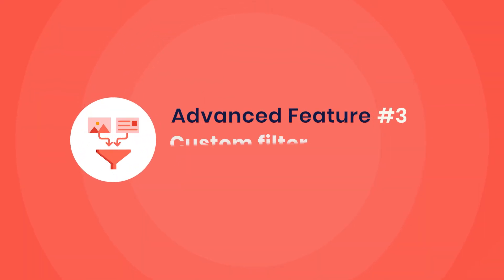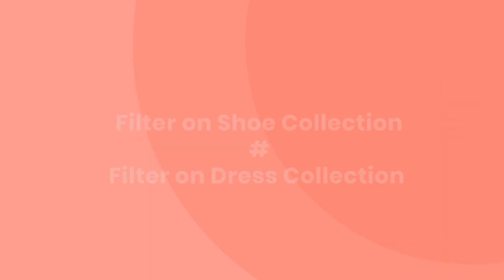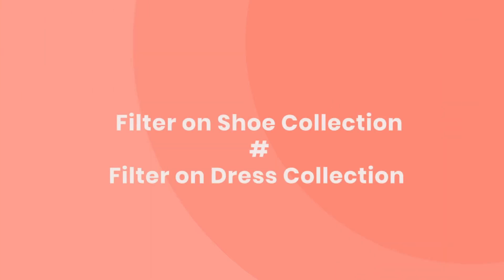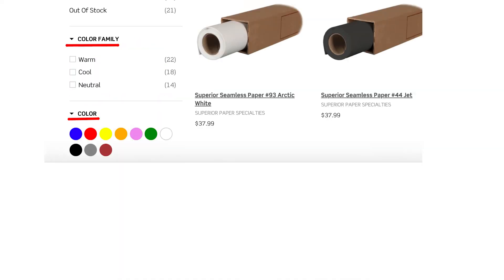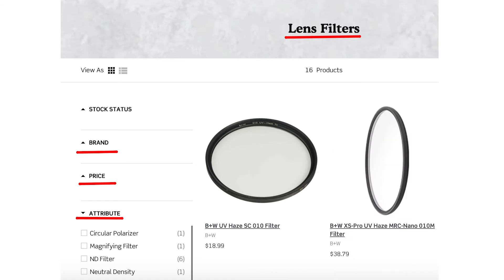3. Custom Filter for Different Collections. Different categories should not have the same filter options, as it would take customers more time to find what they need. Having a custom filter for each collection gives customers a better experience on your website. For example, Pro Photo Supply applies different filter options in the Backgrounds Collection and the Lens Filters Collection.